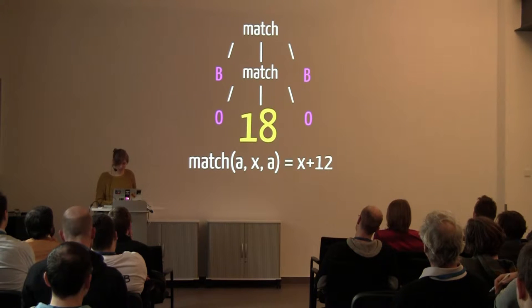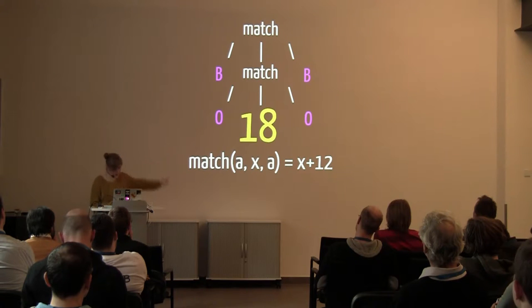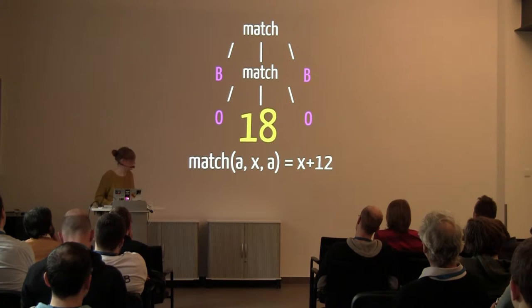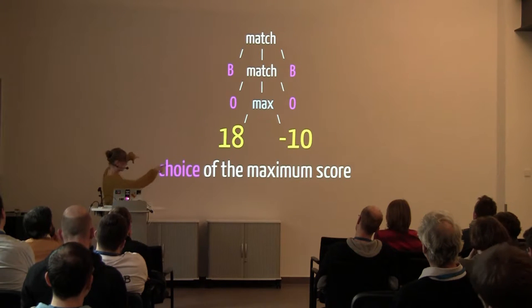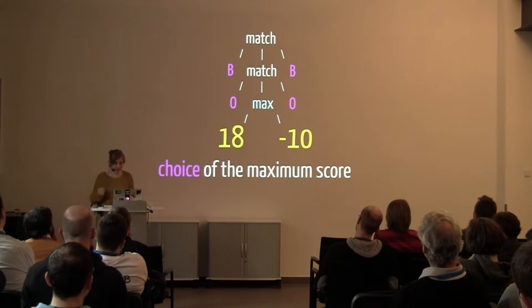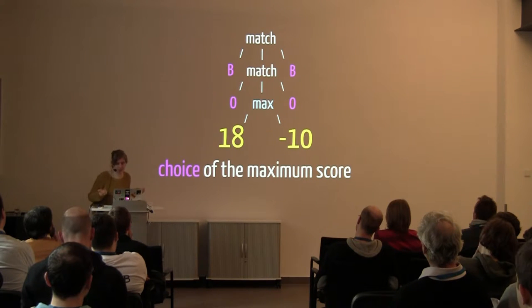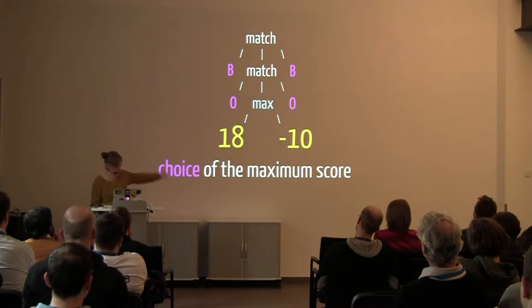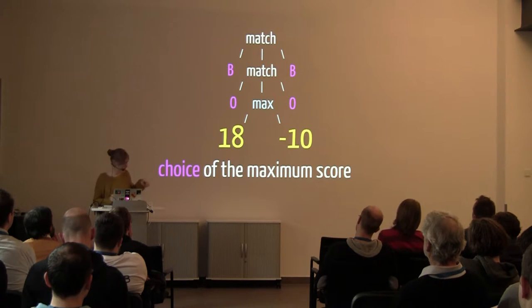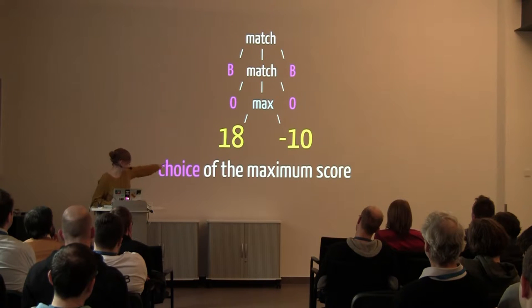Going back a few more steps, something crazy is happening: there's a divergence, a choice. There's a maximum going on — two different scores: 18 on the left side and minus 10 on the right. There's a choice of the maximum score. We write that down: choice of the maximum score.